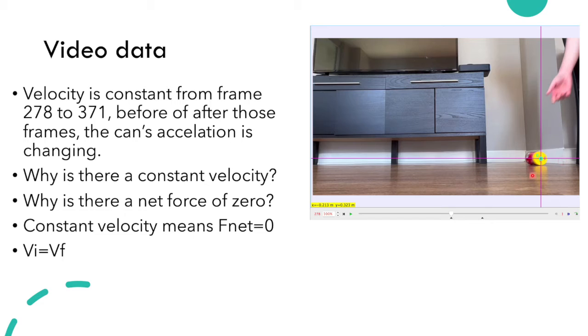In the beginning and end of the video, the can's acceleration is changing. So from frames 278 to 371, in those frames we can consider the velocity of the can as constant. There is a constant velocity which, referring to Newton's second law, is because there is a net force of zero.